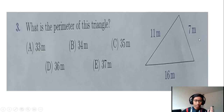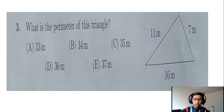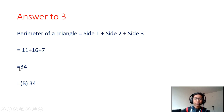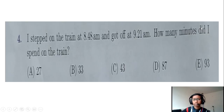Moving on to question number three: what is the perimeter of this triangle? They've given us five options — A, B, C, D, and E. We all know that the perimeter of a triangle is when you add all the sides. When we add all the sides we end up with 34, so the answer is B, 34.